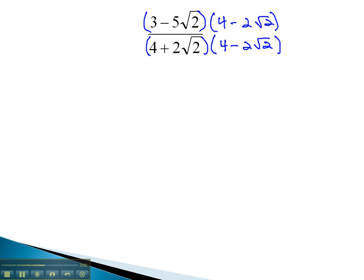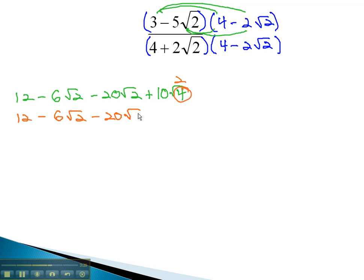Let's focus for a moment on the numerator. We must FOIL: 3 times 4 is 12, minus 6√2, minus 20√2, plus 20. Let's simplify this before we look at the denominator. The square root of 4 is 2, and so now we've got 12 minus 6√2 minus 20√2 plus 20. When we try and combine like terms, 12 plus 20 is 32, and 6√2 minus 20√2 is minus 26√2.